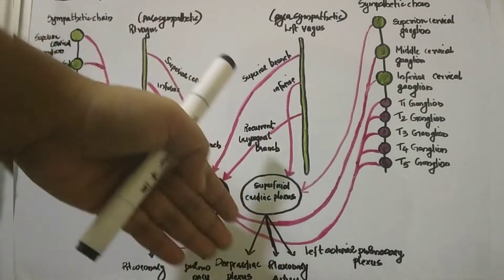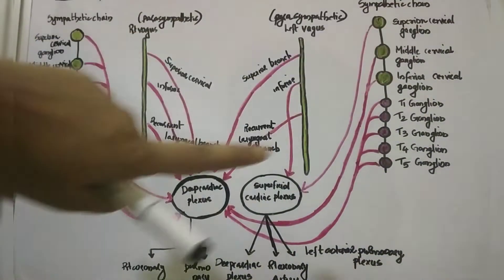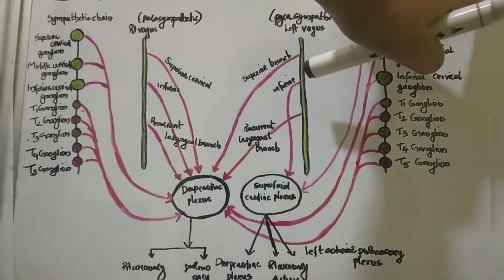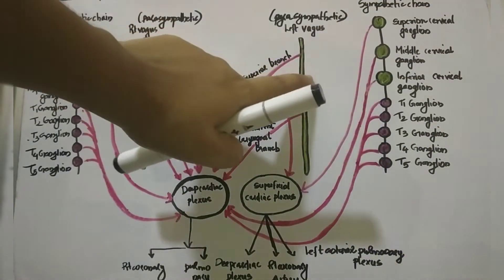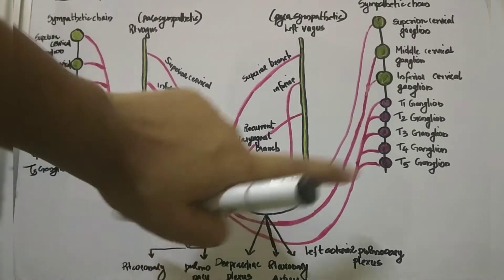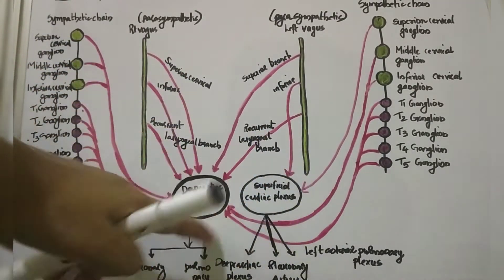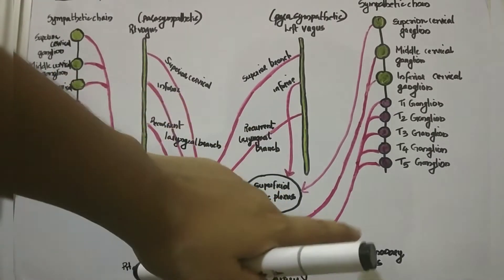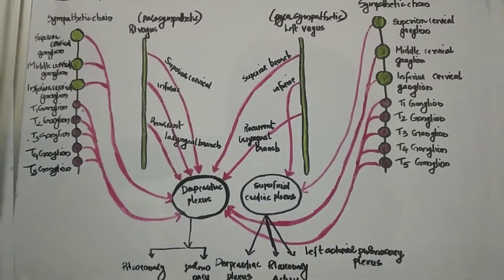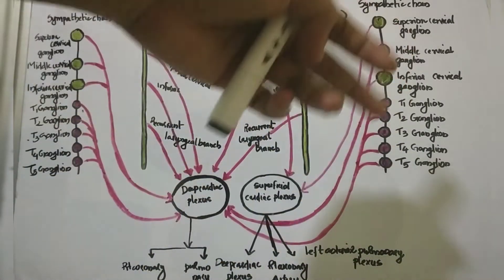Now we will discuss how the superficial cardiac plexus is formed. In its formation, only two branches are involved — one from the left sympathetic chain and one from the left vagus. That branch from the left sympathetic chain is the superior cervical cardiac branch, and from the left vagus it is the inferior cervical cardiac branch. The superficial cardiac plexus is connected to the deep cardiac plexus, the right coronary artery, and also the left anterior pulmonary plexus.